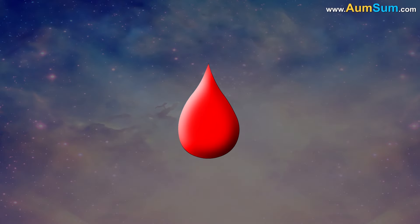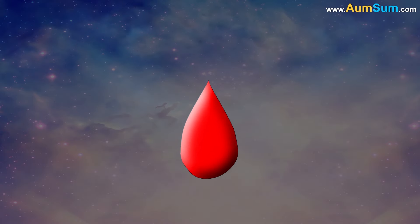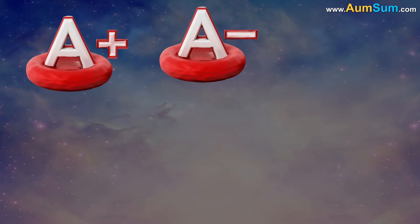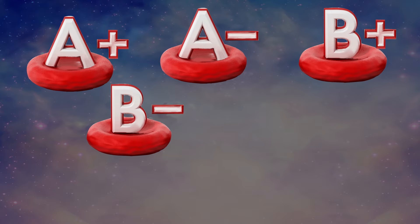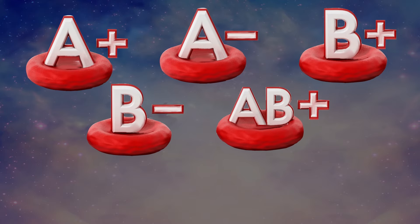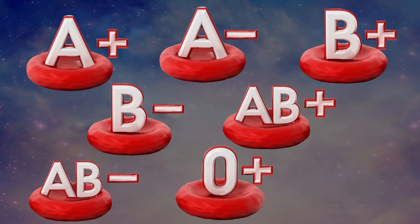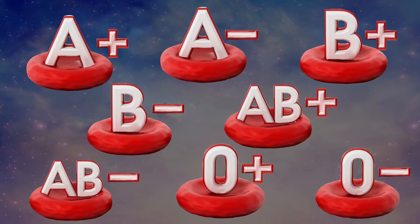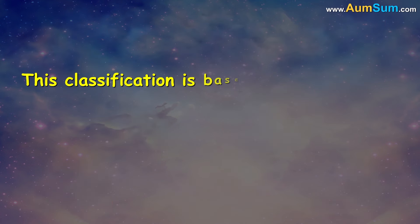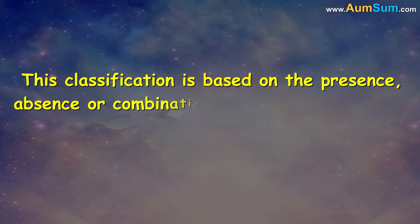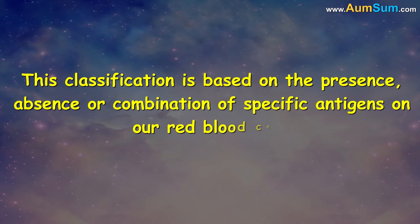Usually, our blood is classified into 8 types: A positive, A negative, B positive, B negative, AB positive, AB negative, O positive, and O negative. This classification is based on the presence, absence, or combination of specific antigens in our red blood cells.